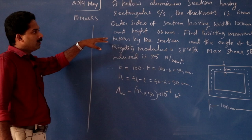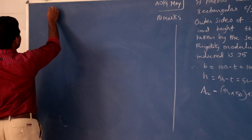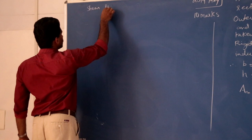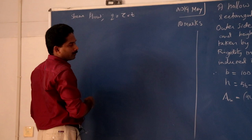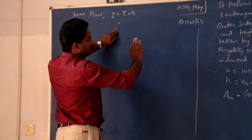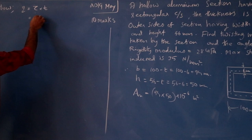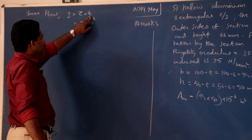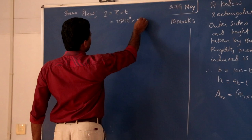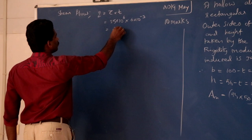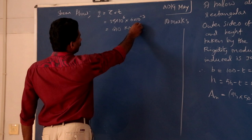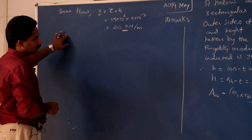First of all, I want to find the value of q — shear flow — and then the answer. At any given section, the shear flow value is constant. So, shear flow q is equal to tau into t. Here, shear stress is given — maximum shear stress induced is 35 N per mm squared, so 35 into 10 raised to 6 N per m squared, into 6 into 10 raised to minus 3 meters. That is equal to 210 kilonewton per meter. That is the unit for shear flow.